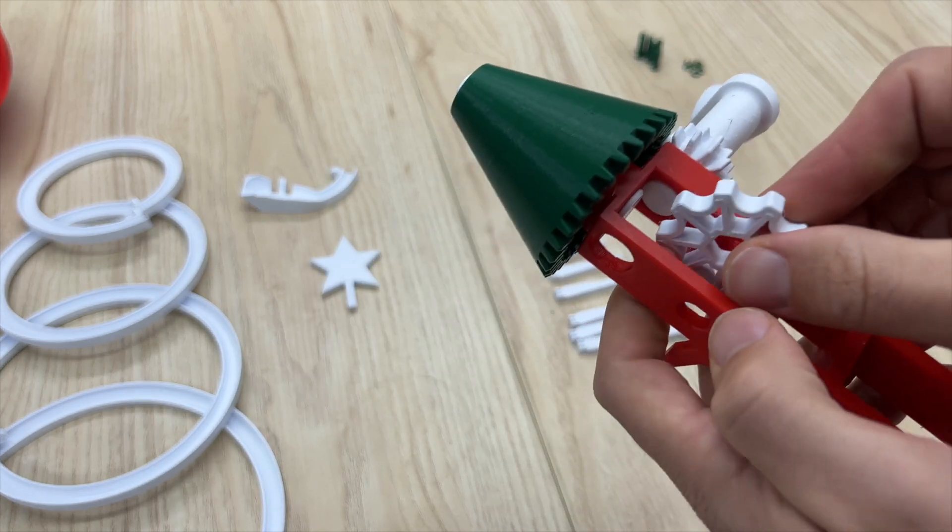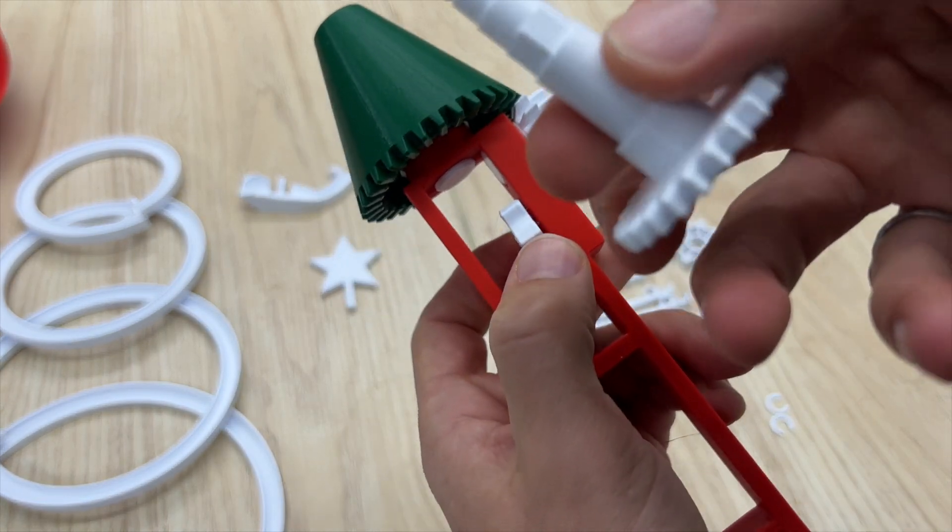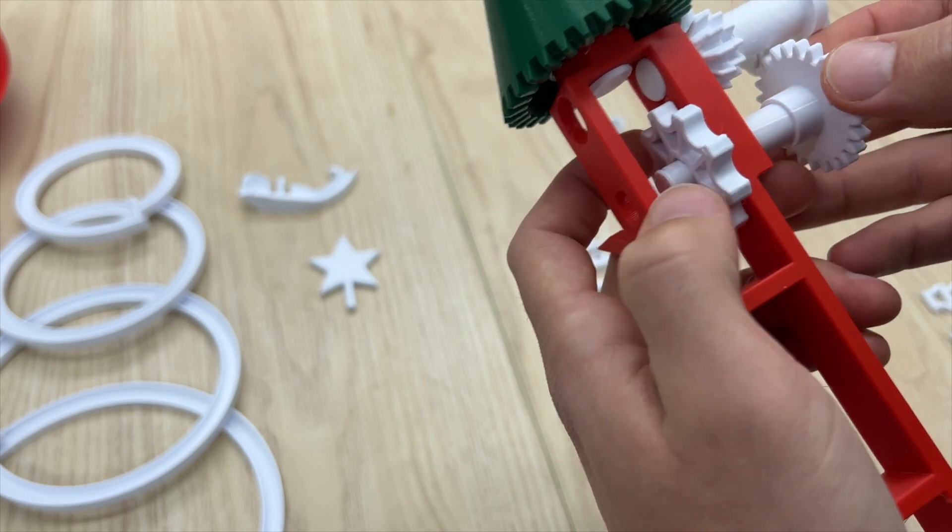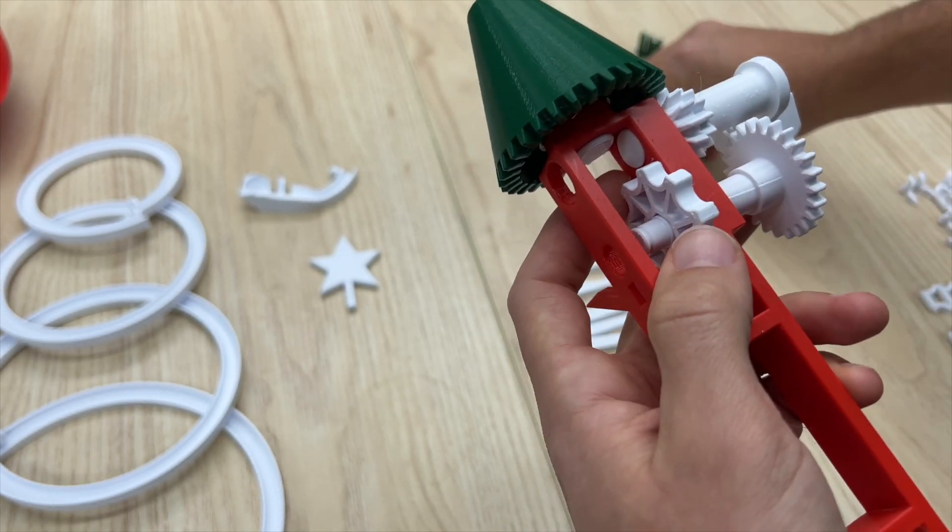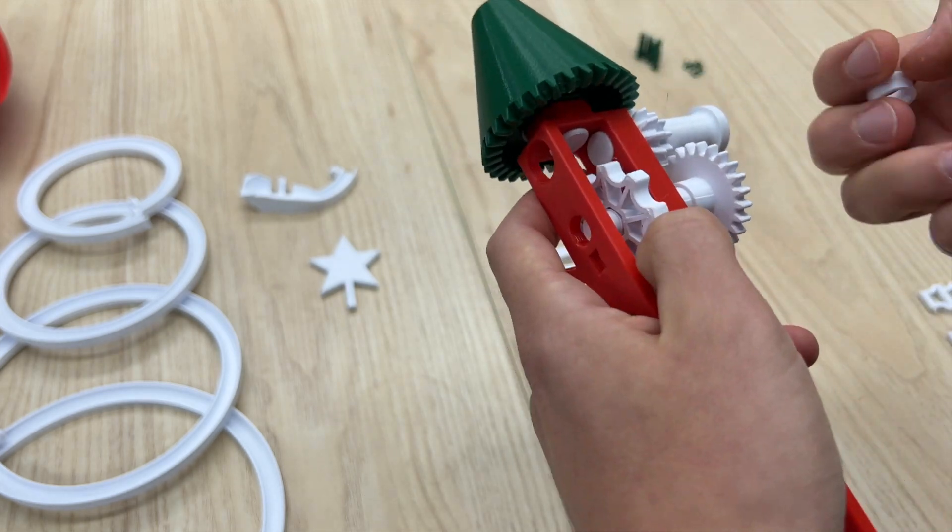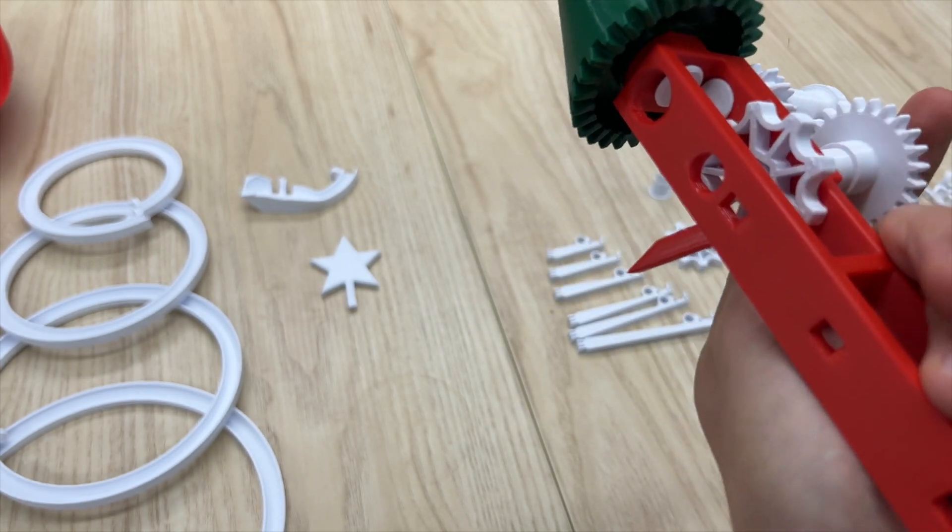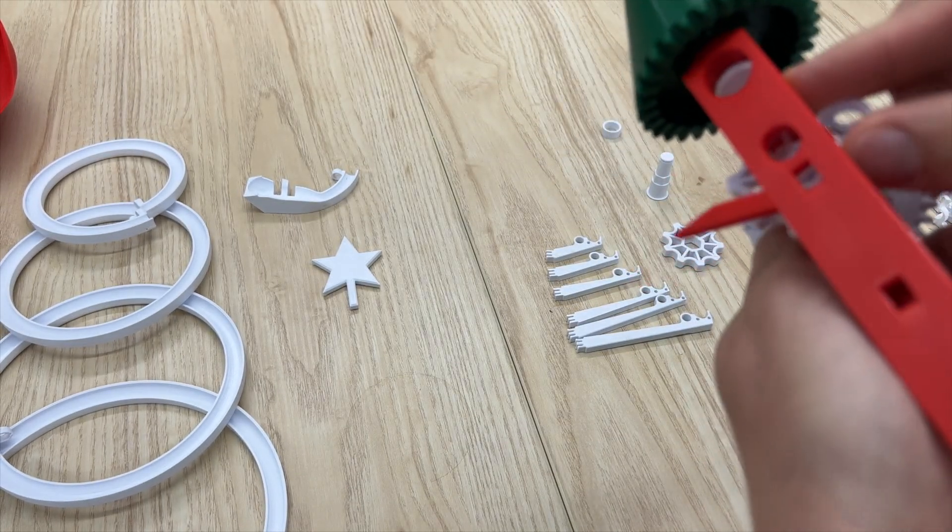Now grab your sprocket and hold it in place right here, and then you can use the shaft on the end of the spur gear to push through there. But before you push it all the way through, you need to grab one of these spacers and finagle it into place just on the end of that shaft just like this.